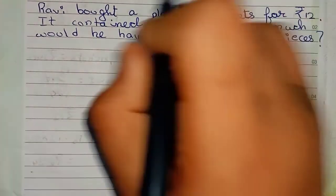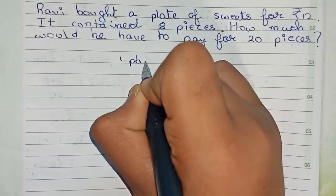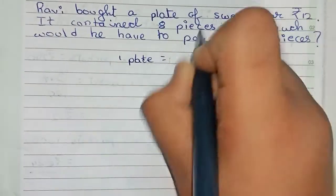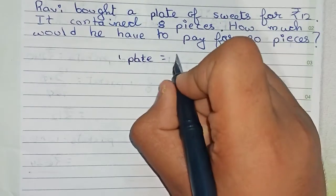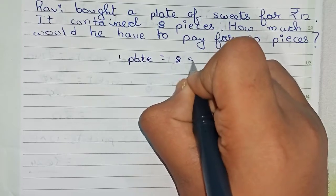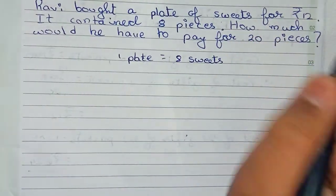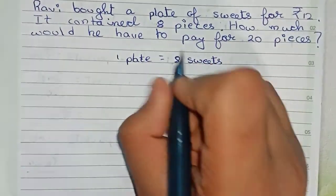I'll solve this. So first we write that 1 plate, that is given in the question, equals 8 sweets. So that means it is given that 1 plate equals 8 sweets.